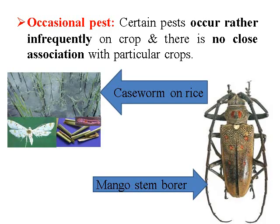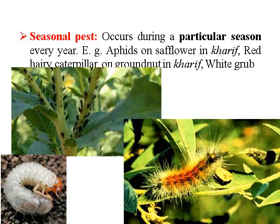Occasional pests: certain pests occur rather infrequently on the crop and there is no close association with a particular crop. For example, the caseworm in rice and the mango stem borer in mango. Seasonal pests occur during a particular season every year. For example, aphids on safflower, red mite on groundnut, and white grub in sugarcane or groundnut.